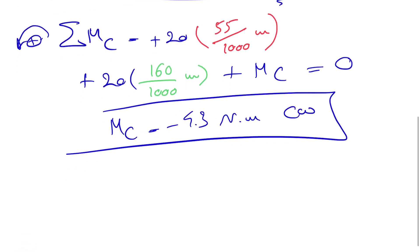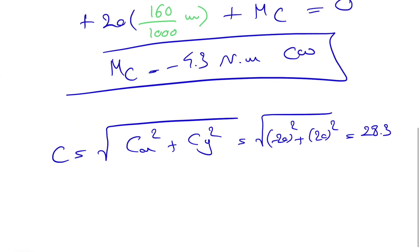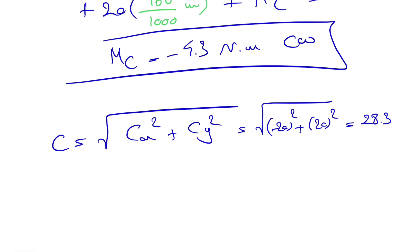If we want to find the reaction at C, if we want to find the magnitude, we simply have C squared, which is the square root of CX squared plus CY squared, which is what we found: minus 20 squared plus 20 squared. That would give us 28.3. Since the X component was negative and Y component was positive, so that was our CX, that's our CY. Let's call this angle theta.